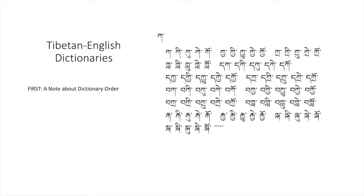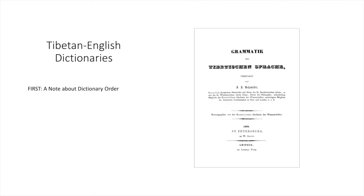If you have worked with Tibetan dictionaries, you are aware of the sort order commonly used — consisting of the root letter, followed by vowels and suffixes, then root letters with subscripts, then root letters with prefixes, and so on. It is important to be aware, however, that this system for sorting Tibetan words did not come into existence until the 19th century. It was invented by Isaac Schmidt and presented in his grammar and dictionary in the 1830s, and it was Sarat Chandra Das who expanded on Schmidt's work some 50 years later that led to widespread adoption of this system.